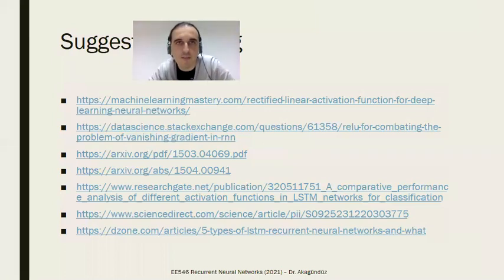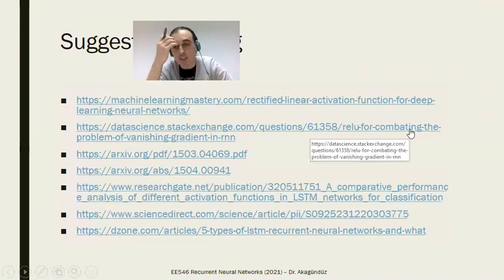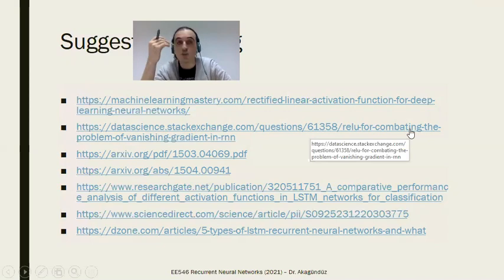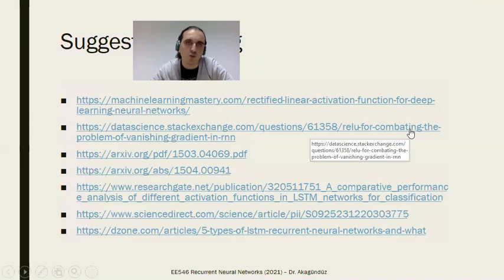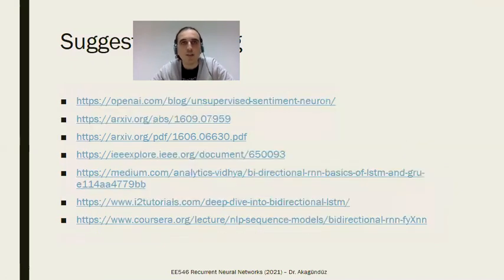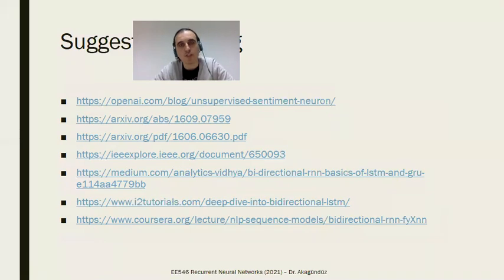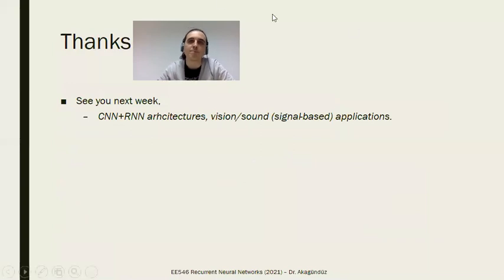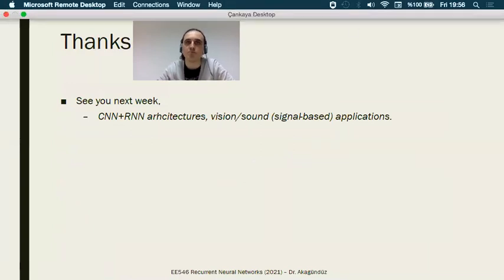You now have a solid understanding of LSTMs, how they function, and how to modify them. I recommend changing the week-three live code to an LSTM — it will most probably be your base for your project if you're doing it in Python. In the following weeks, hopefully we will have another live coding session combining CNNs with RNNs. Any questions?